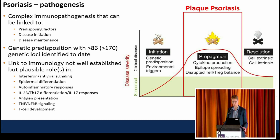What we know about the link of genetics to immunology involves multiple different immunological mechanisms, including interferon and antiviral signaling, epidermal differentiation, autoinflammatory responses — in particular IL-23 and IL-17 immune responses — antigen presentation, TNF and NF-κB signaling, and T cell development.